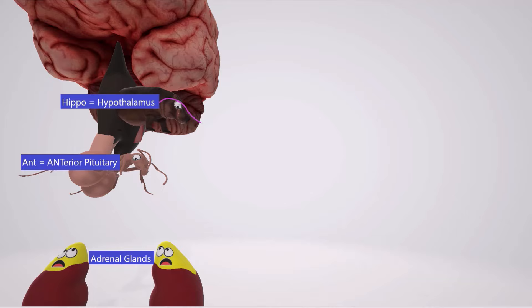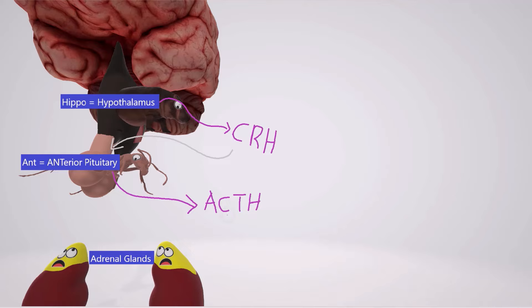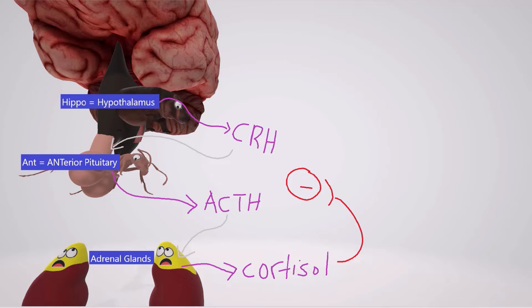Normally what happens is the hypothalamus releases CRH. CRH then goes and tells the anterior pituitary to release POMC, which is subsequently converted to ACTH. ACTH then goes to the adrenal glands and tells it to release cortisol. Cortisol then has negative feedback on this whole system, telling the hypothalamus and anterior pituitary to stop releasing CRH and ACTH, leading to decreased cortisol release.